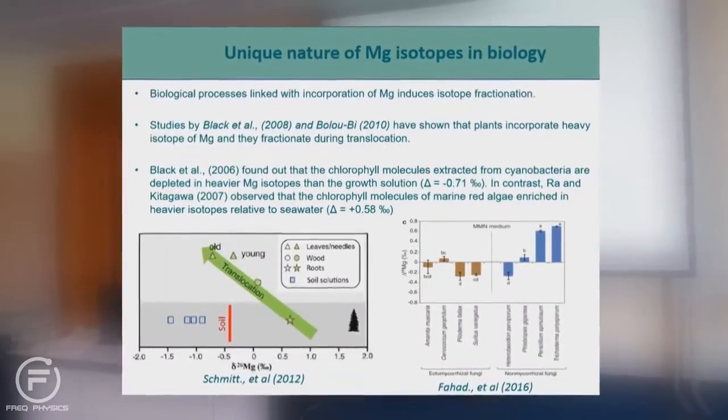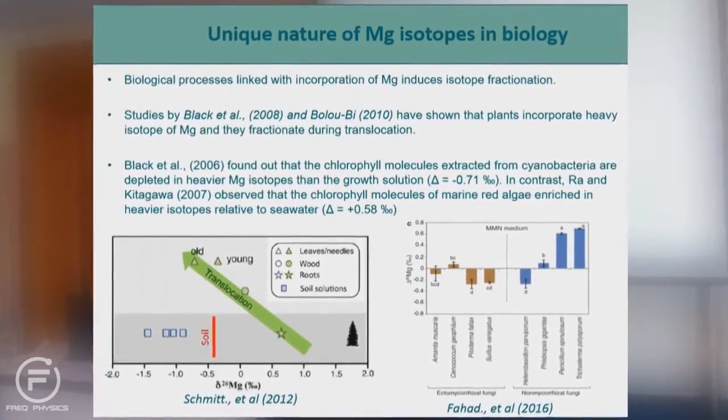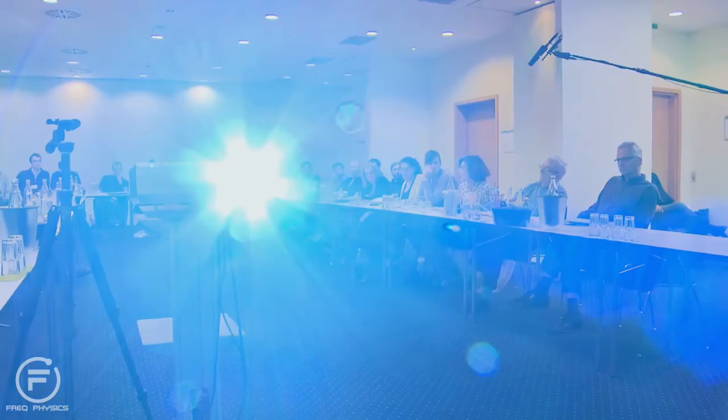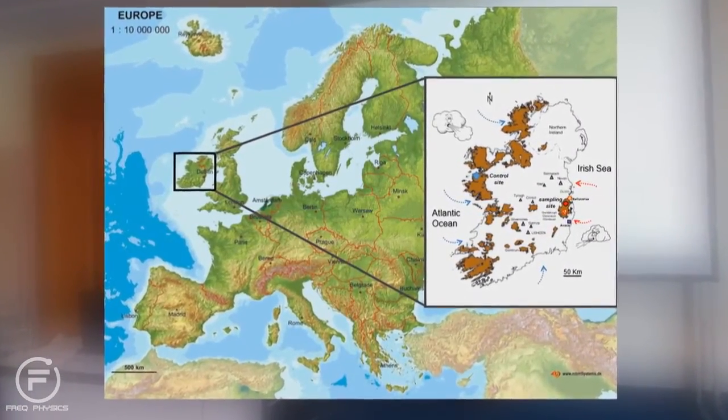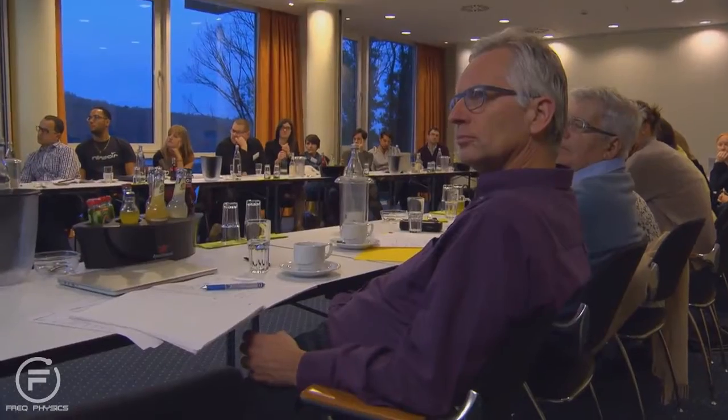Any biological process that incorporates magnesium induces isotope fractionation — the isotopic composition of various parts of plants are different from the nutrient solution or soil solution they were growing on. The more zinc we produce and use, the more zinc gets released into the environment, and the particulates that go into the atmosphere will be enriched in the lighter isotope relative to the purified product that remains.